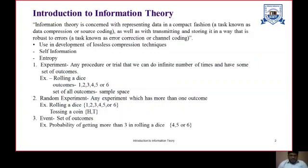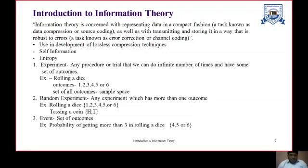Introduction to Information Theory is concerned with representing data in a compact fashion, a task known as data compression or source coding, as well as with transmitting and storing it in a way that is robust to errors, a task known as error correction or channel coding. Information Theory often concerns itself with measures of information or the distributions associated with random variables, and is basically used in development of lossless compression techniques.